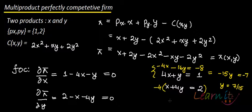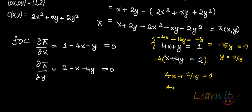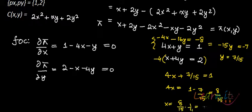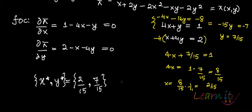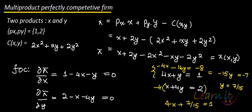With Y = 7/15, we substitute back into the first equation: 4X plus 7/15 = 1, which gives 4X = 8/15, so X = 2/15. These are the values of X and Y from the first order conditions. Now we need to determine whether these are a maximum or minimum using the second order conditions.